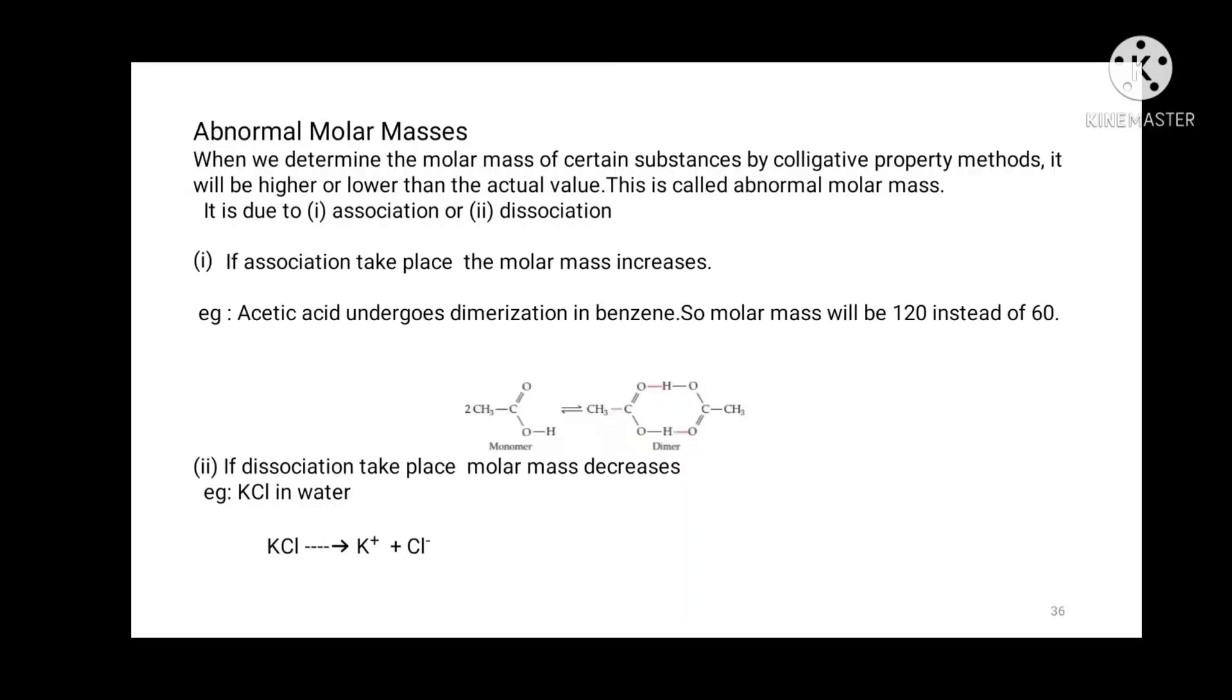For example, KCl potassium chloride dissociates completely in even moderately dilute solution as KCl gives K plus and Cl minus. Here, the effective number of solute particles doubles in a dilute solution with a proportional increase in any of the colligative properties. Hence, the molar mass of KCl calculated on the basis of the measured colligative property will be only half of its normal value.